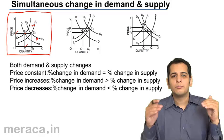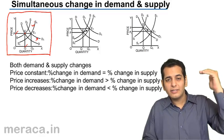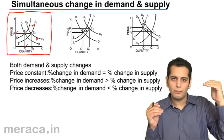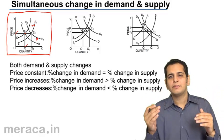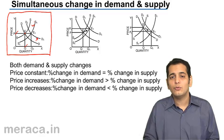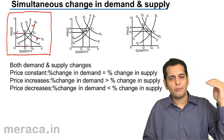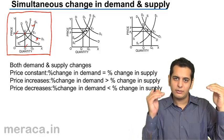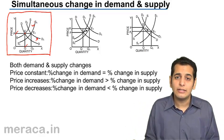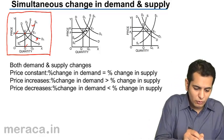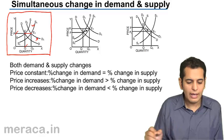Since demand and supply are both increasing by the same proportion, the price remains constant. We've seen that when demand increases and supply remains constant, prices tend to go up. And when supply increases and demand remains constant, prices tend to come down. So both actions negate or nullify each other's effect, and the effect on price is nil — the price remains constant.